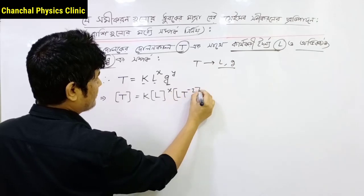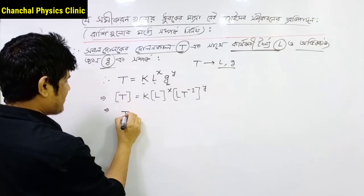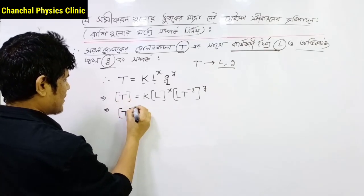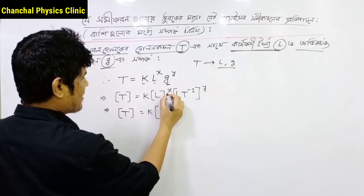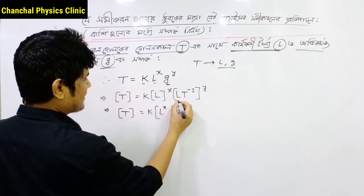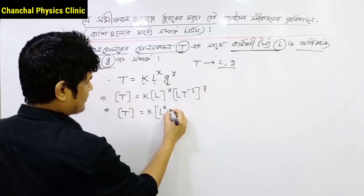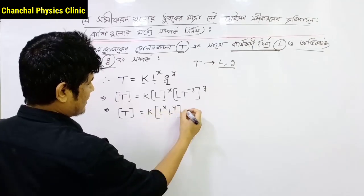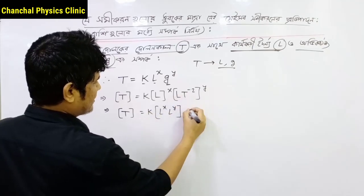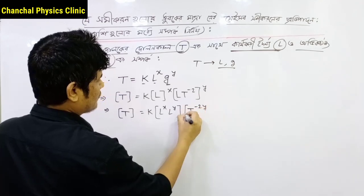That is equal to Y. Now we can write T is equal to 1. The other thing is L is equal to X, and L is equal to Y. L is equal to Y, or L is equal to Y. Now T is equal to minus 2y.